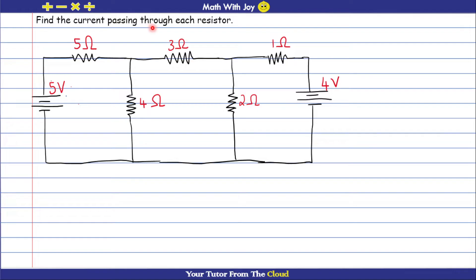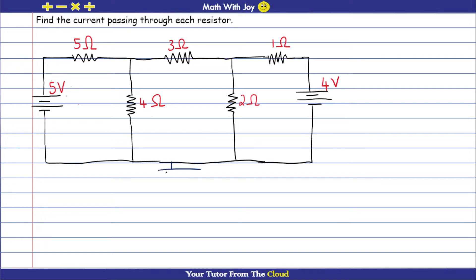The question says: find the current passing through each resistor. We can also work out the power, the voltage, etc., but let's focus on the current through each resistor. I'm going to use nodal analysis, which is based on Kirchhoff's current laws. The first step is to choose your ground — I'm going to choose this bottom node as my ground.